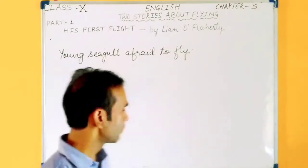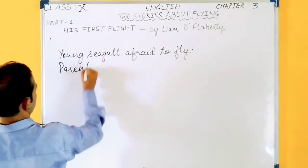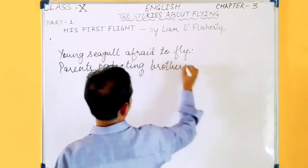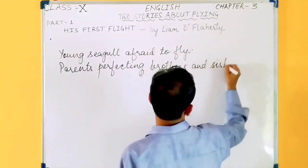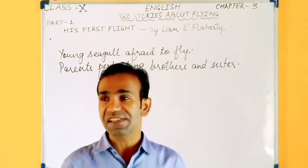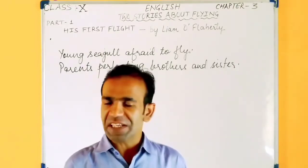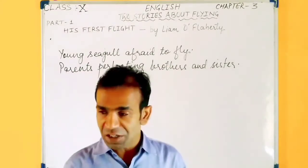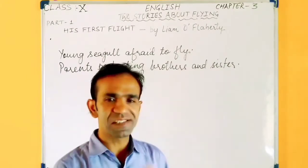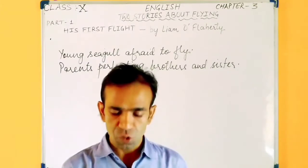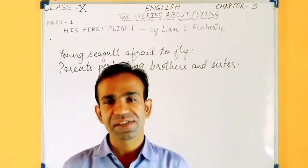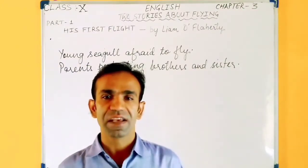The next point: parents perfecting brothers and sister. The seagull helplessly watched his parents flying with his brothers and sister. The parents were perfecting them in the art of flying — teaching them how to skim the waves and how to dive for fish, since fish is the main food of seagulls. The whole family went on taunting him for his cowardice.